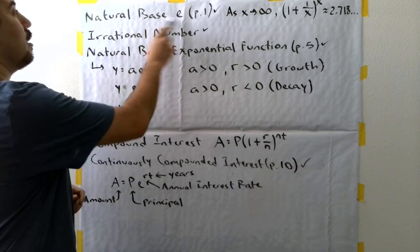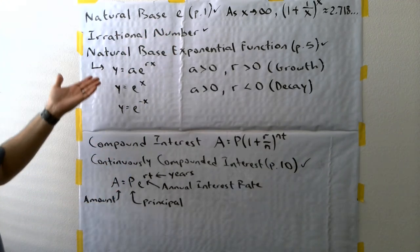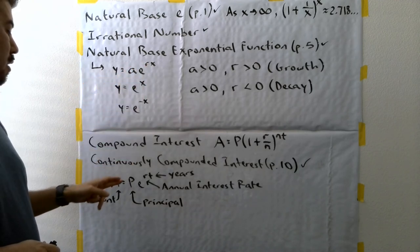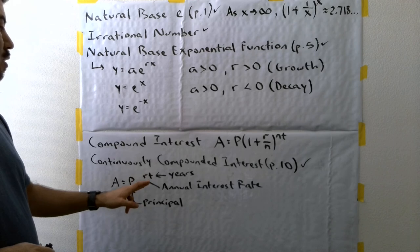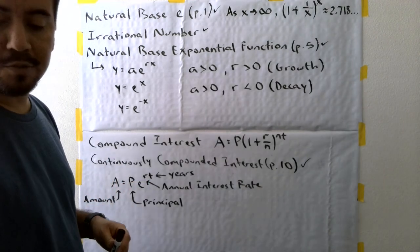And so, these are all the different types of terms and equations we're going to be focusing on in this section. Again, primarily with the natural base E, and how that applies to some of these functions that we're going to encounter. Y equals AE to the RX, and A equals PE to the RT. And that's hopefully what will help you get through this section. So, I hope that was helpful.